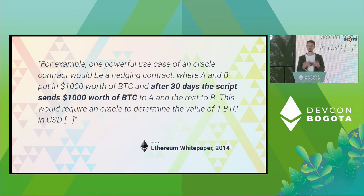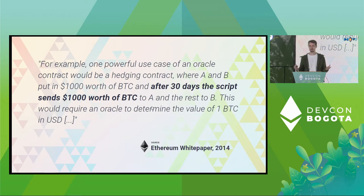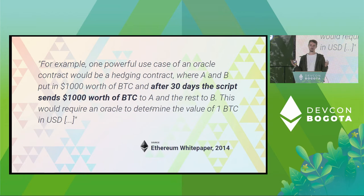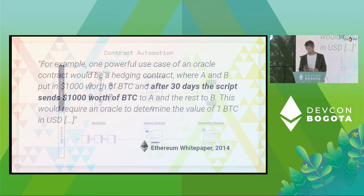If I'm a user, I now have a non-deterministic gas price. Once in a while, when I interact with a DApp, it's going to cost me 100,000 gas. Another time, there's some expensive maintenance, and suddenly it's going to cost me 500,000 gas. It's also unreliable because I can't really rely on my users calling the contract at a specific point in time. This is where contract automation comes into play.